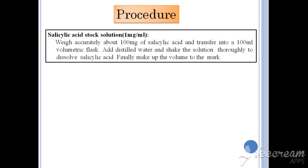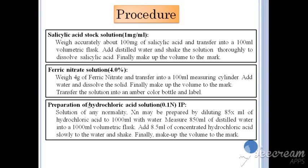The first step is to prepare a stock solution of salicylic acid — ultimately we want 1 mg of salicylic acid per ml of solution. Weigh accurately about 100 mg of salicylic acid and transfer into a 100 ml volumetric flask, add distilled water and shake thoroughly to dissolve, and finally make up the volume to the mark.